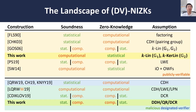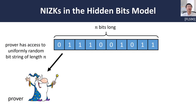So our work provides new constructions of statistical NIZKs from qualitatively weaker assumptions in a publicly verifiable setting, as well as new constructions in the designated verifier setting. So now I will give a brief overview of our main constructions.